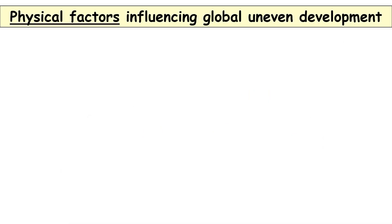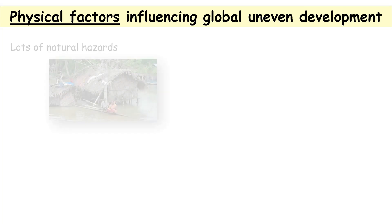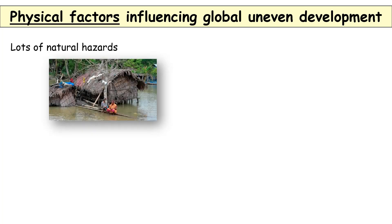The first set of factors are physical factors — totally natural things. Here are four. A country that has lots of natural hazards has to spend money rebuilding and thinking of defences to combat them, and therefore has less money to spend on developing. An example is Bangladesh, which continually gets horrendous floods due to cyclones hitting the country.